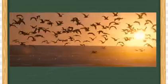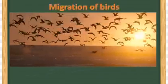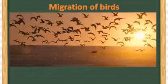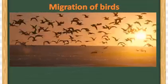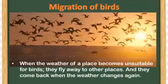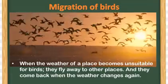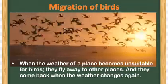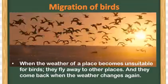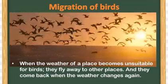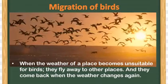Here is an interesting fact about birds. When environmental conditions go wrong — when the weather of a place becomes unsuitable — birds fly away to other places and come back when the weather changes again. This is called migration of birds: when environmental conditions go wrong, they migrate from one place to another.